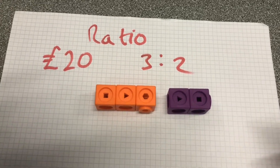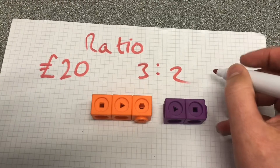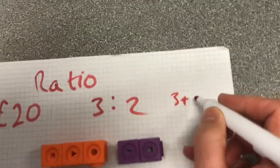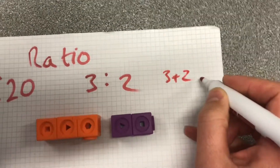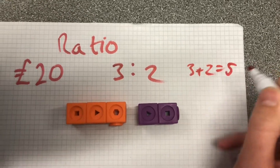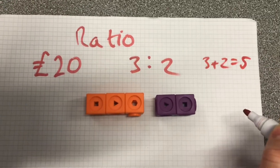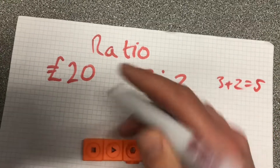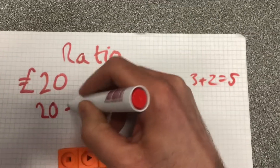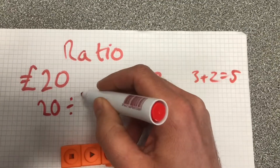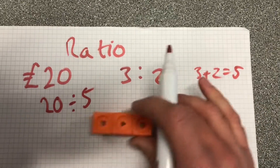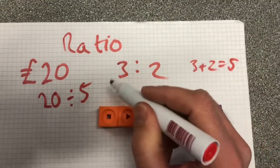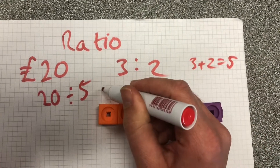You would do 3 plus 2, which equals 5. So we're going to add those 2 — 3 plus 2 — together, which gives us 5 parts in total. And we do 20 divided by 5. So now we're going to split that 20 into 5 to know what each of these blocks is worth. And what is that? 4.